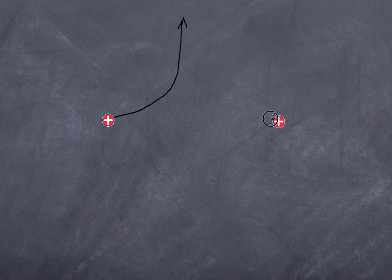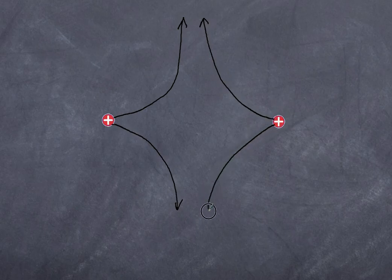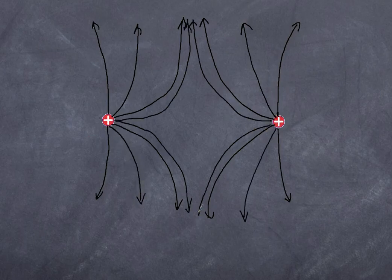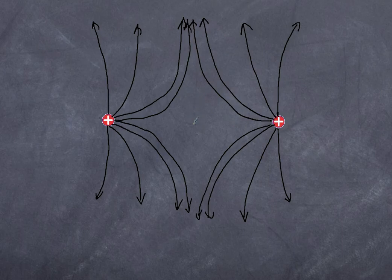To draw the field for two same-sign positive charges: arrows go strongly outward from each charge, pushed away, with a region of space between them where the electric field is zero. The field progressively gets weaker and weaker toward that midpoint. This zero-field region has practical applications to be discussed in another video. For two negative charges the diagram is identical except all arrows point inward toward the charges.